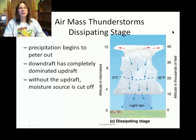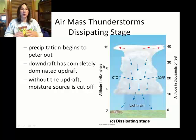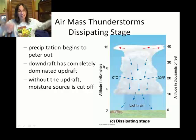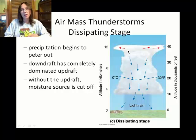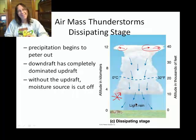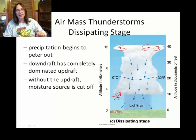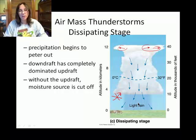The last stage is the dissipating stage. Whether it's a supercell, a cell in a squall line, or part of a mesoscale convective complex, all cells go through these three stages. In the dissipating stage, the updraft is lost — only the downdraft remains. You won't see severe weather — no lightning or similar phenomena — in the dissipating stage.